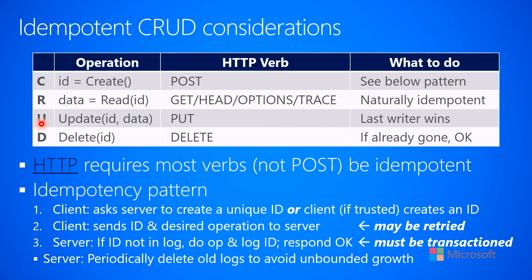For an update operation, the client performs an update against an ID with the desired new data — not saying add $100, but rather make the balance be this specific value. This is done with an HTTP PUT verb. PUT is last-writer-wins, so if you do a PUT in a retry loop, you're putting the same data multiple times. The end result is idempotent: setting the balance to 100 repeatedly still leaves the balance at 100.